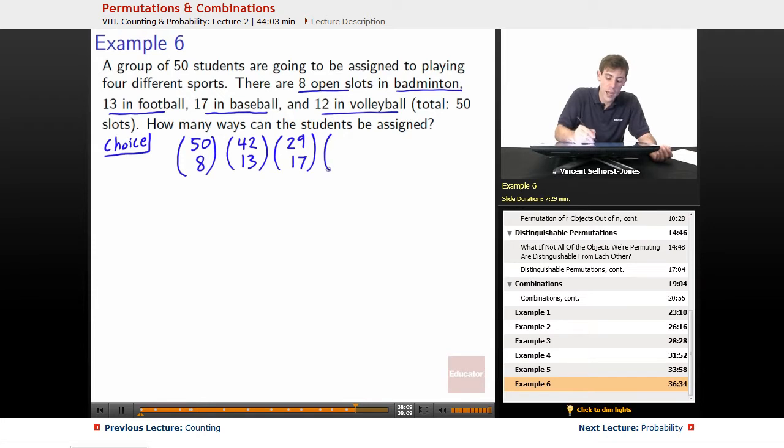And finally, 12 for volleyball. 29 minus 17 means we have 12 students left and every single one of them is automatically going to be chosen for volleyball. 12 students choosing 12 students, every one of them is going to have to go into volleyball because they're the group left over.